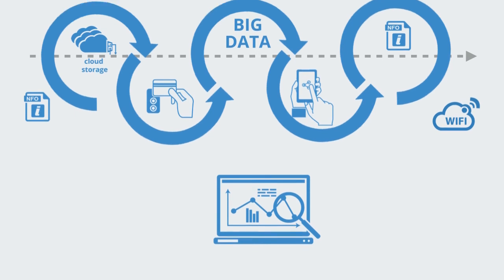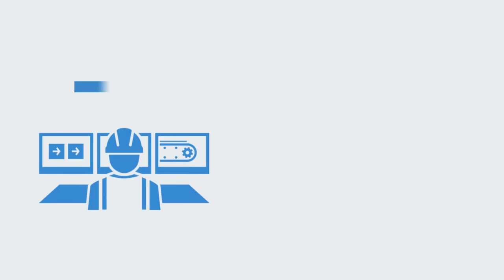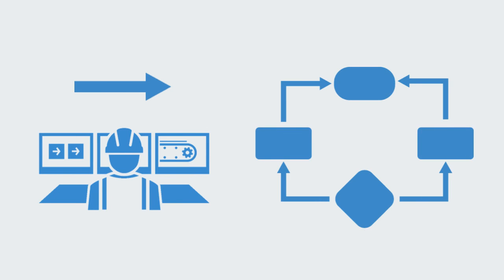Businesses in these industries should no longer see themselves as simply selling resources en masse, but instead move up the value chain to become end-to-end material solutions providers, building their business model around the full life cycle of material flows through the economy. Reuse, repair, upgrade, refurbishment, capacity sharing, longevity, and life extension — each one of these is a business opportunity in the making along the life cycle of any materials value chain.